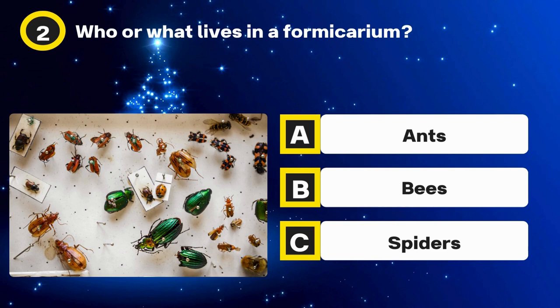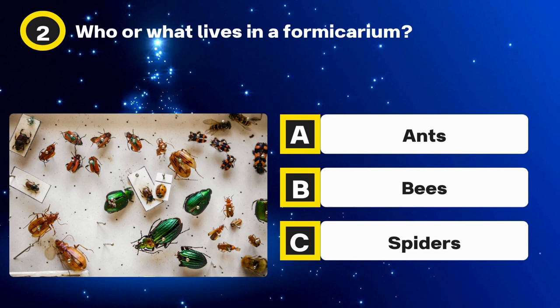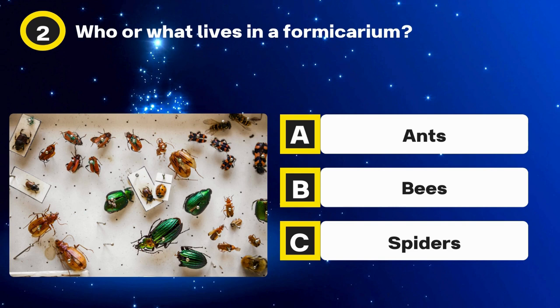Question 2. Who or what lives in a formicarium? Options: Ants, Bees, Spiders. The answer: Ants.